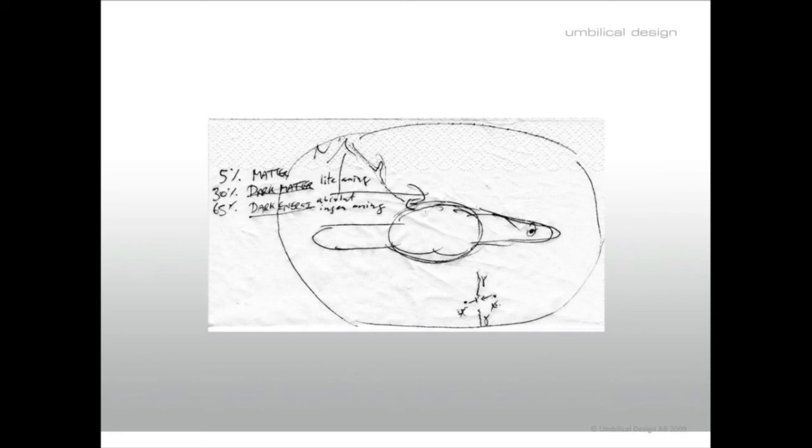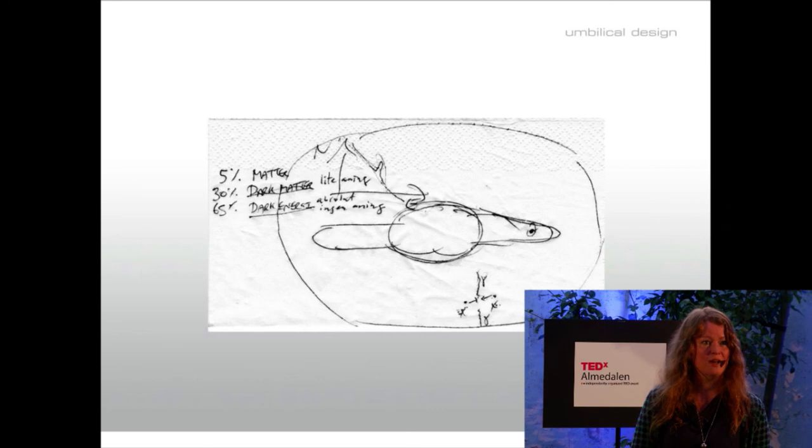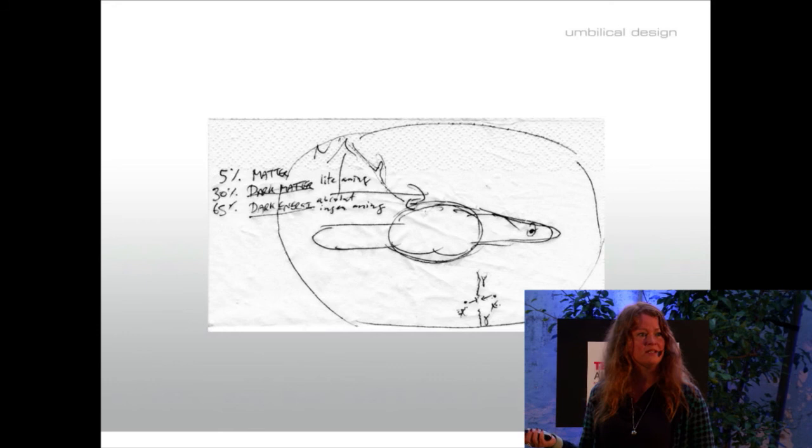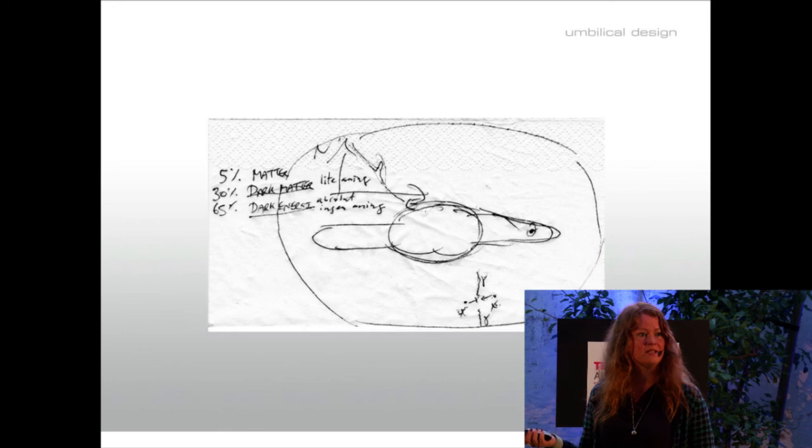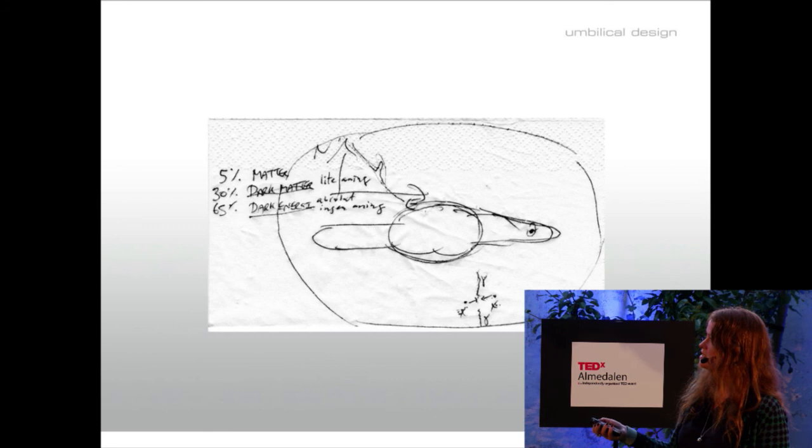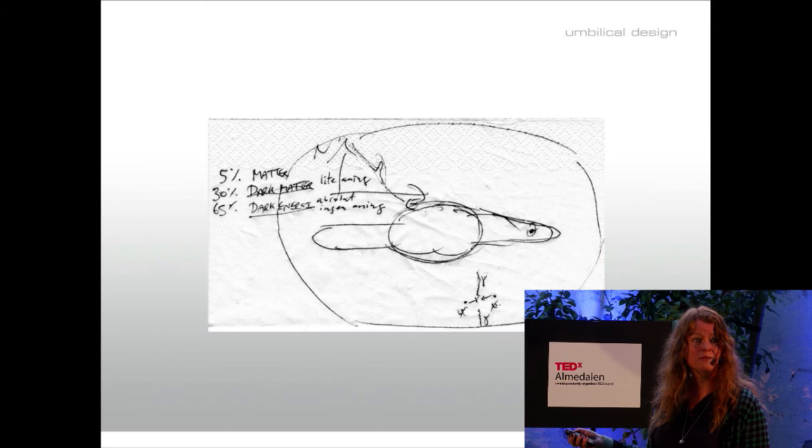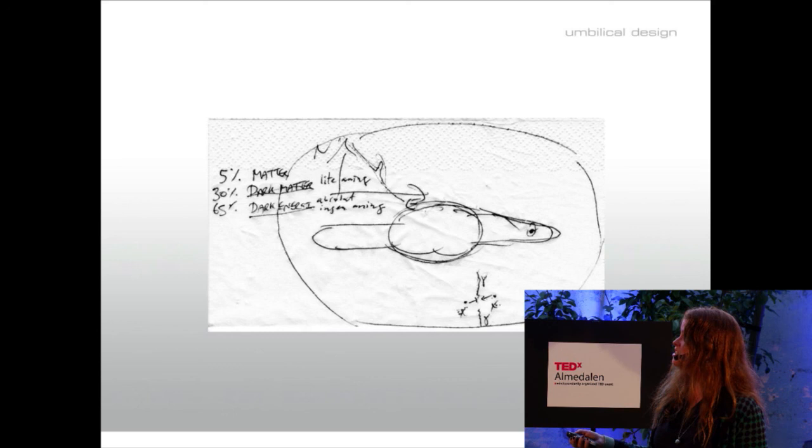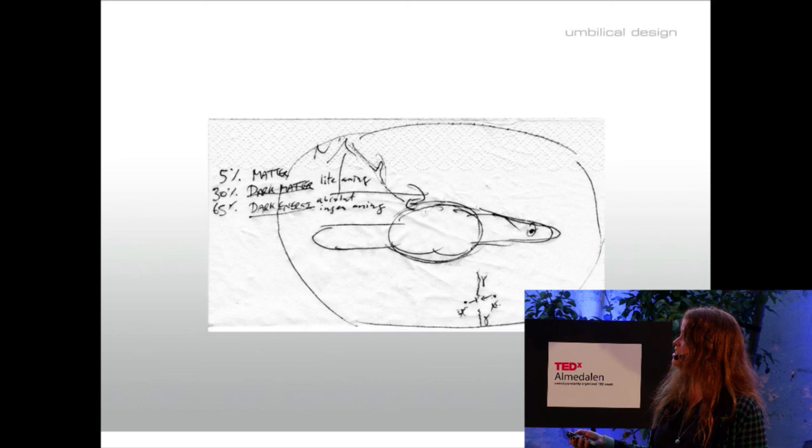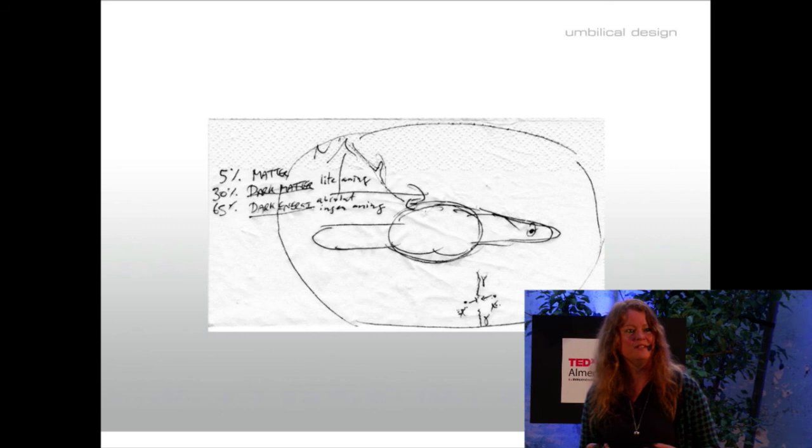It takes courage to look at this little image. We will not look so long at this one. This is actually a sketch made by our Swedish astronaut Christer Fuglesang when we were out in a bar. He made this sketch on a napkin for me about the universe. I wanted to share this with you, but we look a short while because it's a bit troubling. Five percent of the universe is what he called matter—that's what we know. Thirty percent is dark matter—here he writes 'lite aning' (we know a little). Sixty-five percent is dark energy, and here he writes 'absolut ingen aning' (absolutely no idea). So you see, it's a bit troubling to look at, but also inspiring that we need to continue to explore.